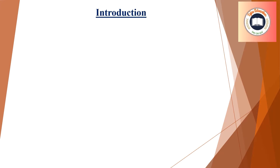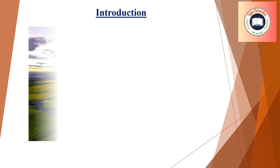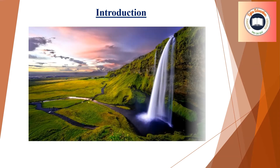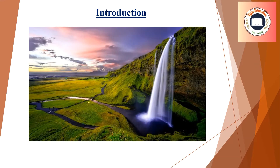Introduction. Plants make our surroundings look beautiful and green. Plants are of great use and importance to us. Over the years there has been an increase in the population of human beings. To meet their needs, human beings have destroyed forests by cutting down trees without planting more of them. In this chapter, let us learn about the importance of trees, the ill effects of destroying forests, and the ways to save trees.